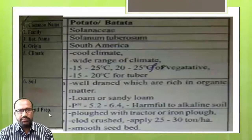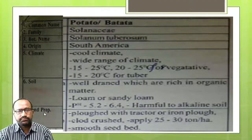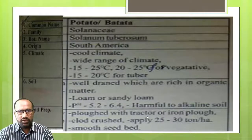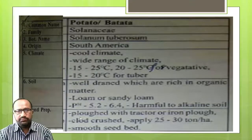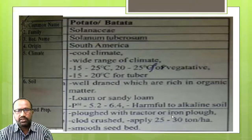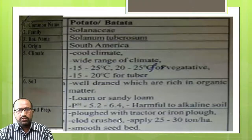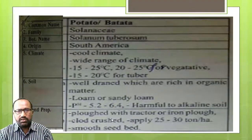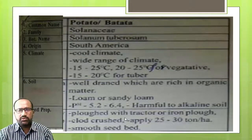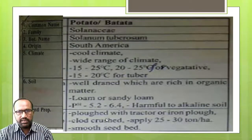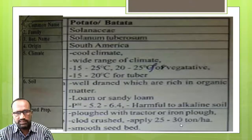Land preparation — pre-tillage operation. One plowing should be done immediately after harvest of the previous crop by tractor. Then 2 to 3 times crosswise harrowing up to good soil tilth. Then apply 20 to 30 tons of FIM (farmyard manure) per hectare before the last harrowing.